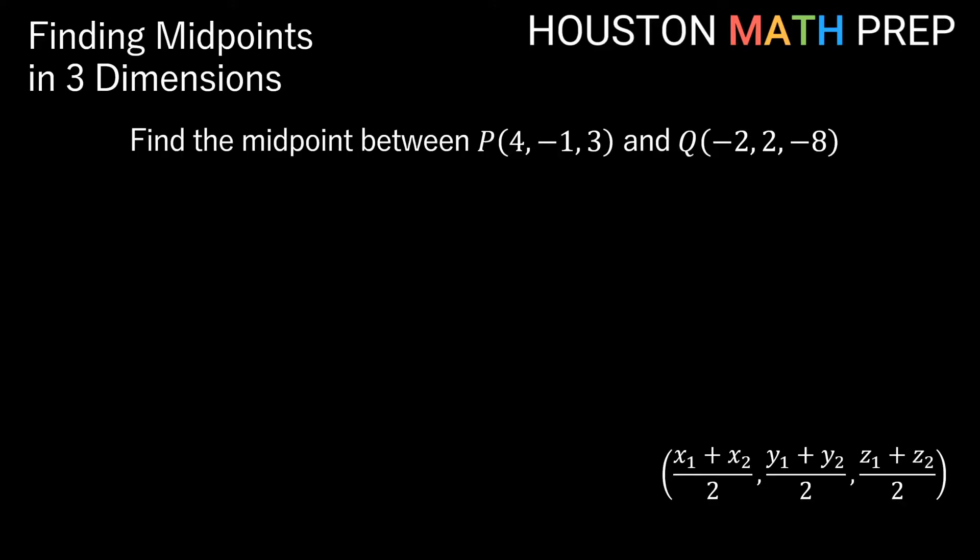We'll work a few examples with you here. We're going to find the midpoint, our first one between the point P, which is 4, negative 1, 3, and the point Q, which is negative 2, 2, negative 8.